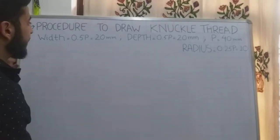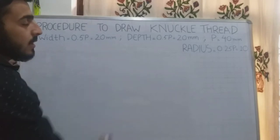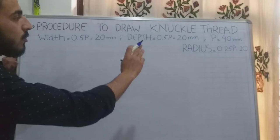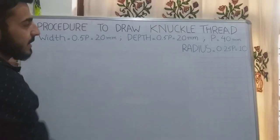Now in the case of knuckle thread, the width and depth of the thread is 0.5p. Let us suppose I am again taking pitch as 40mm. According to that, this thread's width and depth will be 20mm.